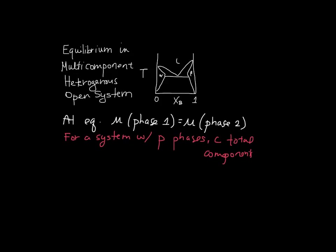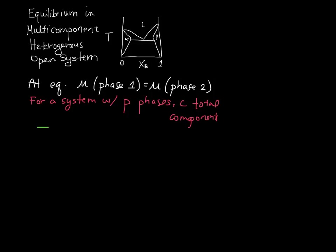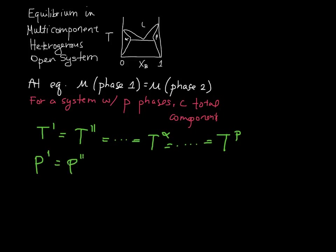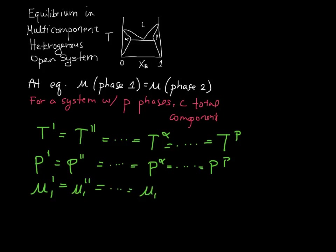the equilibrium conditions are as follows: the temperature in phase one is equal to the temperature in phase two — using Roman numerals — and so on, equal to the temperature in the alpha phase, all the way to the P-th phase. So the temperatures have to be equal in all phases. The same statement is true about pressures. The chemical potential of component one in phase one must equal the chemical potential of component one in phase two, equal to that in the alpha phase, and so on.